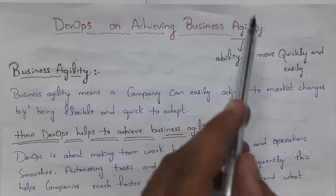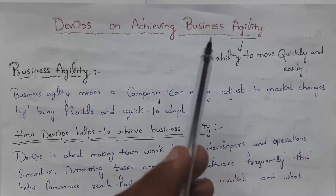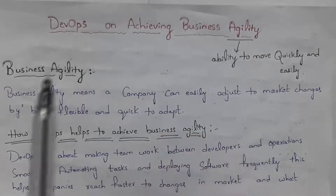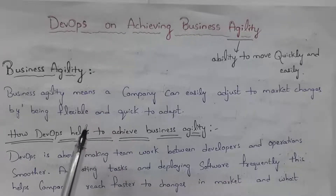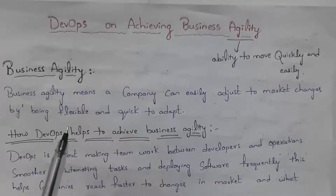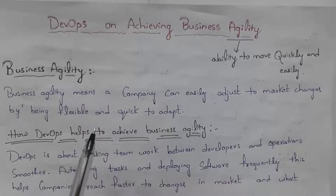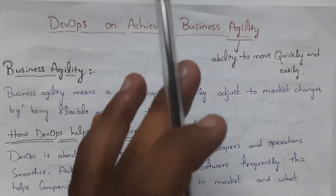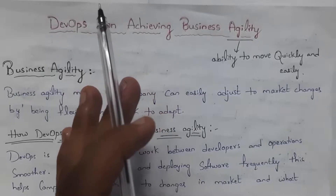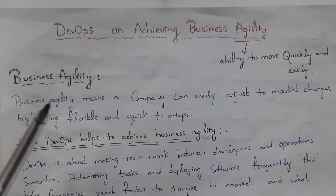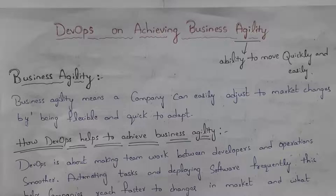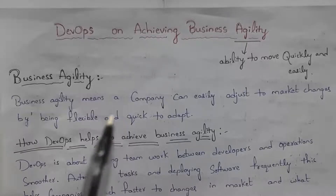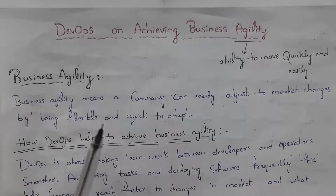Let's get started. First I will explain the impact of DevOps on achieving business agility. The meaning of agility is the ability to move quickly and easily. Business agility means a company can easily adjust to market changes by being flexible and quick to adapt. For example, consider Samsung — long back they produced normal smartphones, then 2G, 3G, 4G, and now 5G mobiles, immediately launching new smartphones based on user requirements.